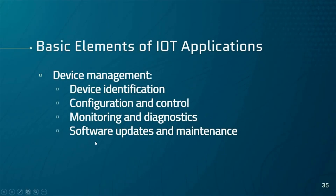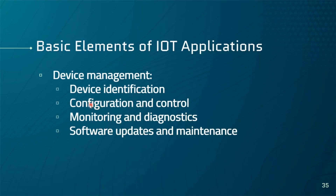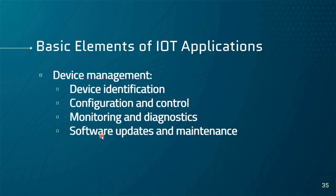In any IoT application, each device must be managed. This means the server needs to identify every device — what it does, its ID, its timestamp, and where it operates. We also need to configure and control each device, monitor its performance and output, and update and maintain its software remotely — known as firmware over-the-air (FOTA), where firmware is updated and maintained through the internet.